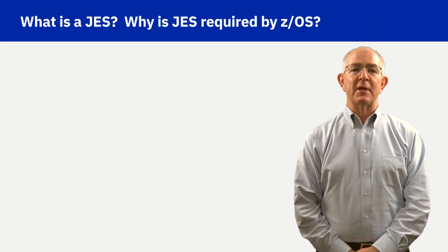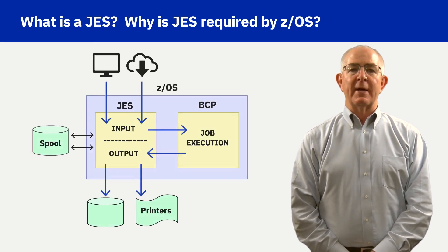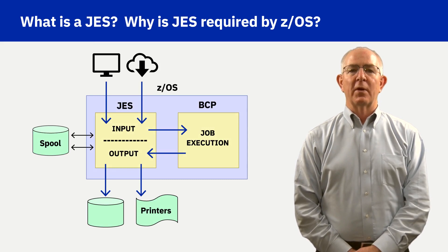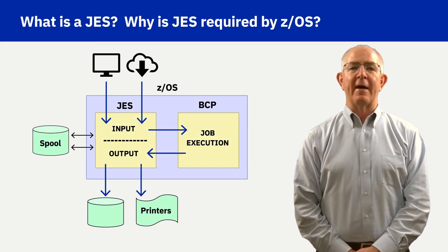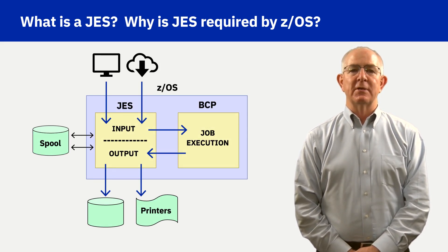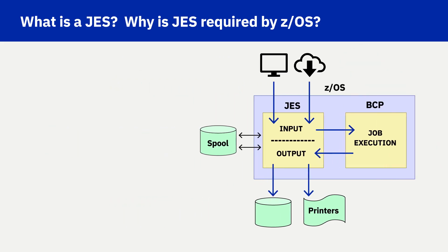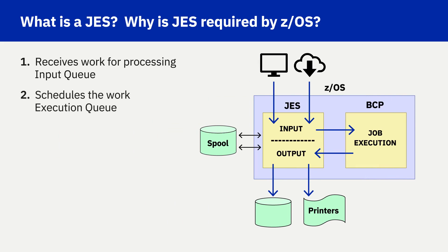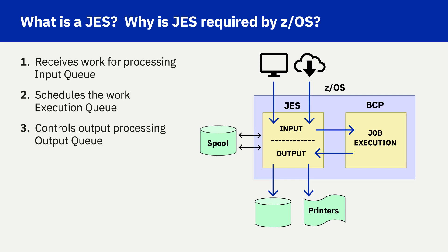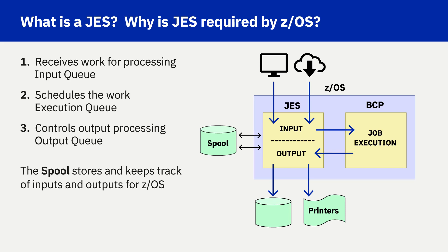What is JES and why is JES required by ZOS? The diagram shows the critical JES role related to managing jobs before and after job execution. Job entry subsystem, JES, is used by ZOS to: 1. receive jobs into the operating system, 2. schedule jobs for processing, and 3. control job output processing. A JES-controlled spool dataset is used to store all job input and output.